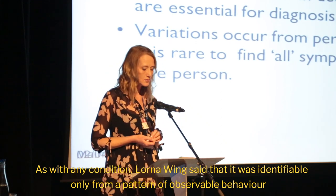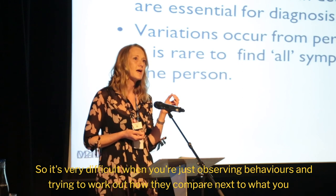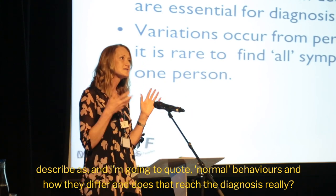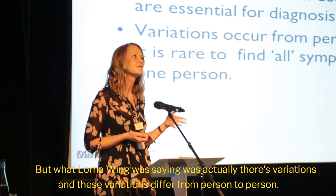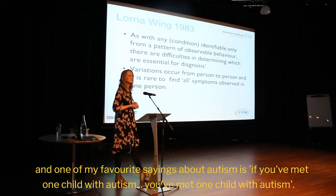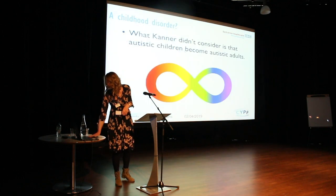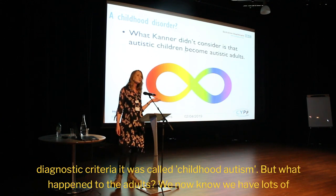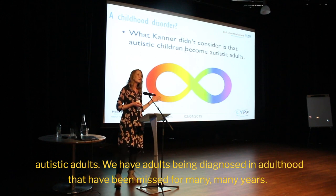Lorna Wing said Autism was identifiable only from a pattern of observable behaviour. It's very difficult when you're just observing behaviours and trying to work out how they compare to what you'd describe as normal behaviours. But Lorna Wing was saying there are variations that differ from person to person. One of my favourite sayings is: if you've met one child with Autism, you've met one child with Autism. Kanner didn't consider that Autistic children become Autistic adults. When Autism first went into diagnostic criteria it was called Childhood Autism — but we now have lots of Autistic adults being diagnosed in adulthood who have been missed for many, many years.